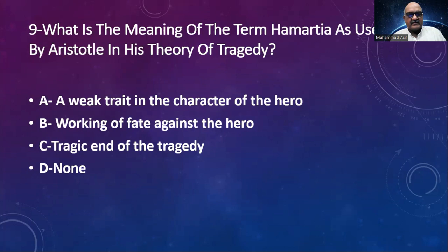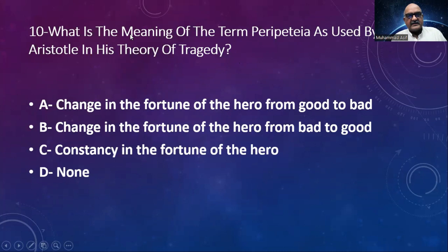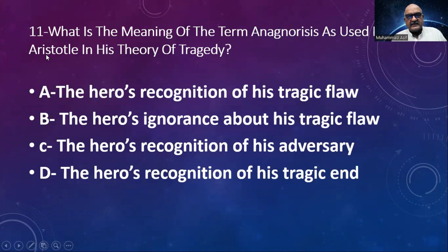What is the meaning of the term 'peripeteia' as used by Aristotle in his theory of tragedy? Options: change in the fortune of the hero from good to bad, change from bad to good, constancy in the fortune of the hero, none. The answer is change in the fortune of the hero from good to bad.